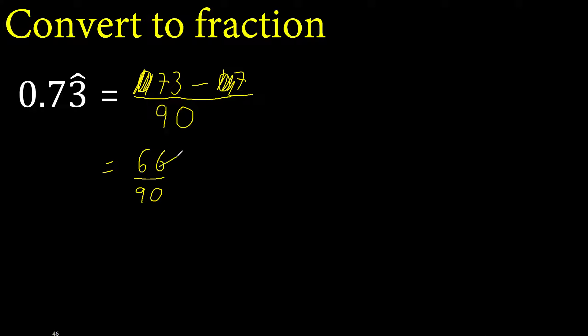Subtract. It can be divided because both can be divided by the same number. Divided by 2 is 33. Divided by 2 is 45. Can be divided by 3: 11 and 15.